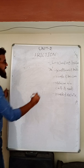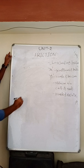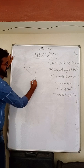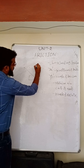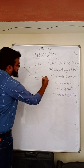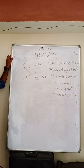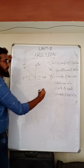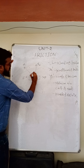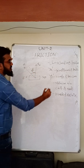The third topic is angle of friction, denoted by the symbol phi (φ). Angle of friction is defined as the angle between the resultant force and the normal reaction. Considering a body with normal reaction Rn perpendicular to the contact surface, applied force P, frictional force F, and resultant force R — the angle between resultant R and normal reaction Rn is called the angle of friction, φ.